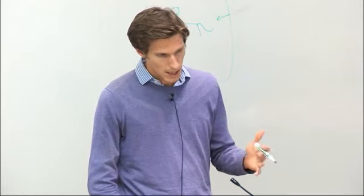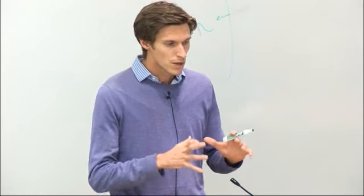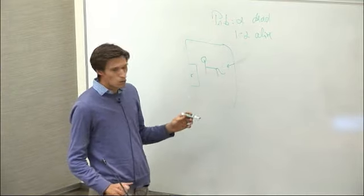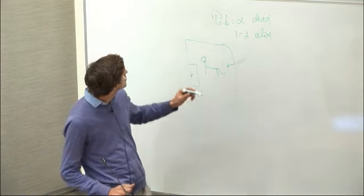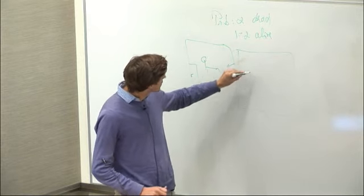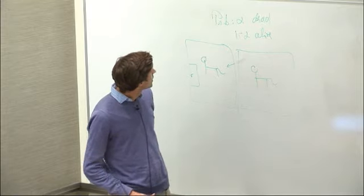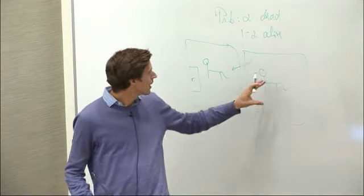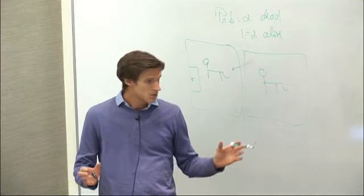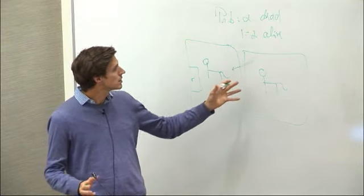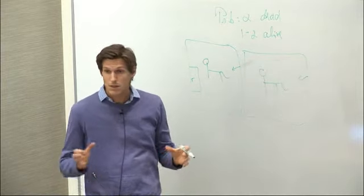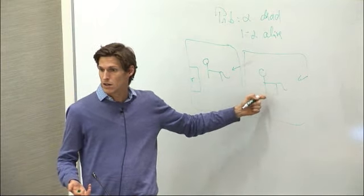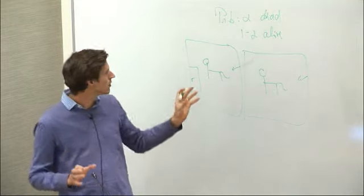We're going to see later in the talk how quantum states are massaged through quantum algorithms. Dealing with only one qubit is not very interesting. A two-qubit system could be two cats, each in their own box. If your system is just a direct product, it means the things happening to the two cats are completely independent — you open the door here, you'll see what happened to that cat, and it has no influence on the other one.